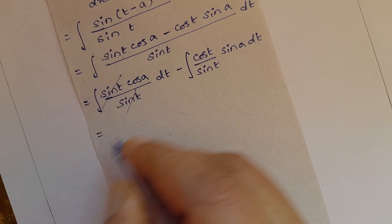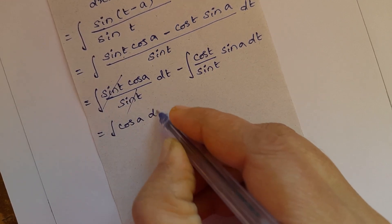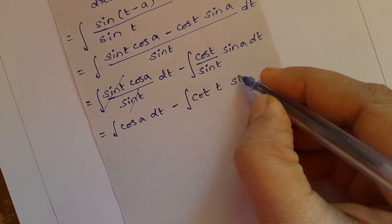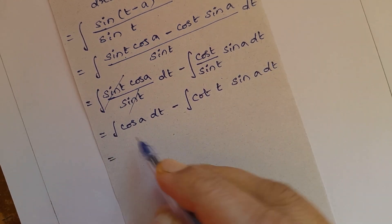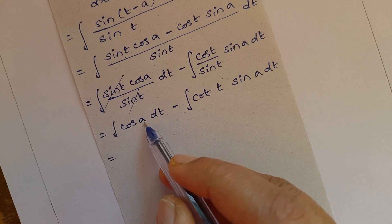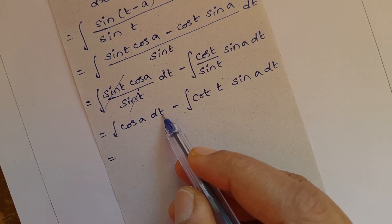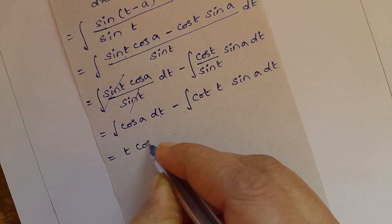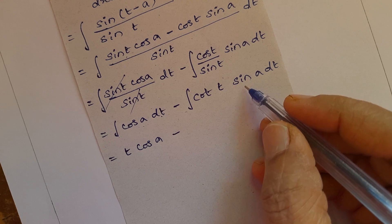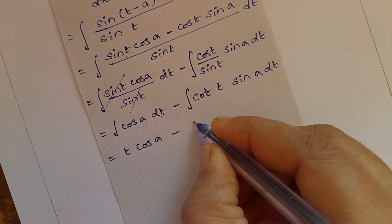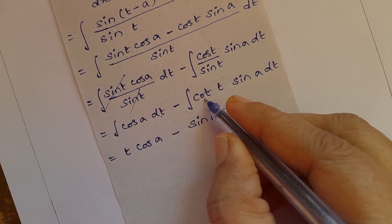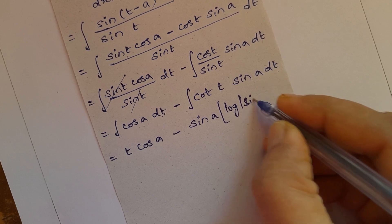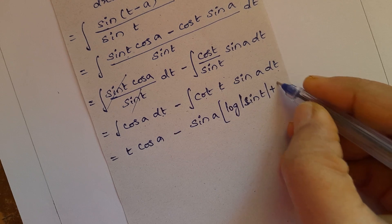The sin t in the numerator and denominator cancel, giving integral of cos a dt, minus integral of cot t times sin a dt. Since cos a is not being integrated with respect to t (as a is a constant), and likewise sin a is constant with respect to t, we take sin a outside. So integral of dt is t, and integral of cot t dt is log|sin t|.